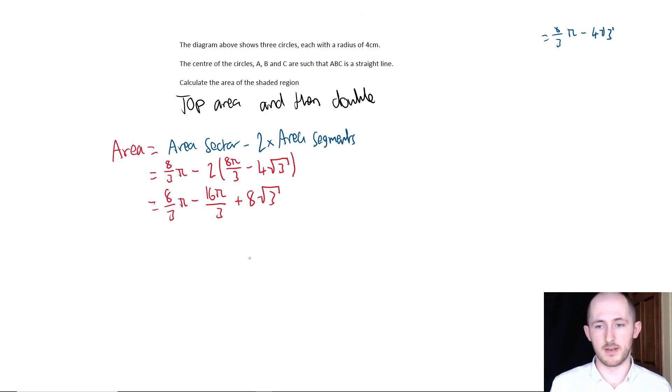Now what's it going to be if we do 8 pi over 3 minus 16 pi over 3? That's just going to give me negative 8 pi over 3, right? Because we're just subtracting the numerators because the denominators are already the same.